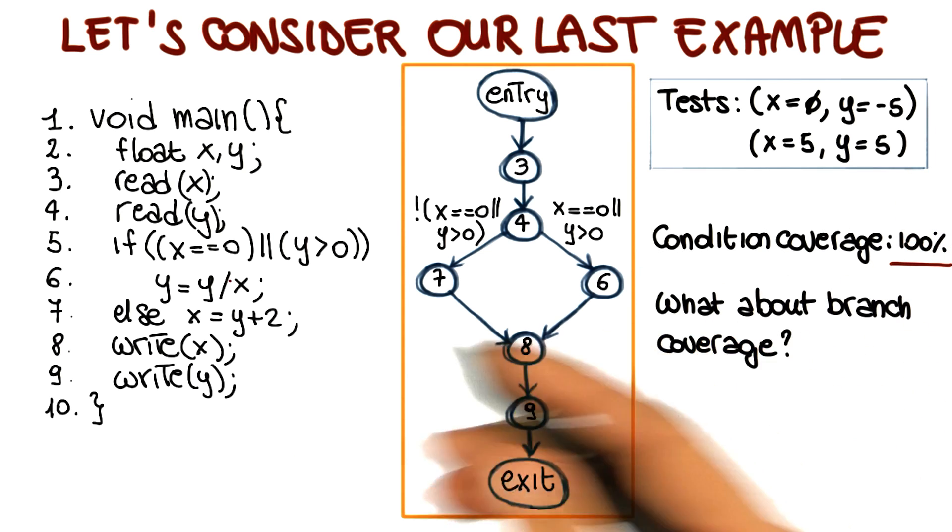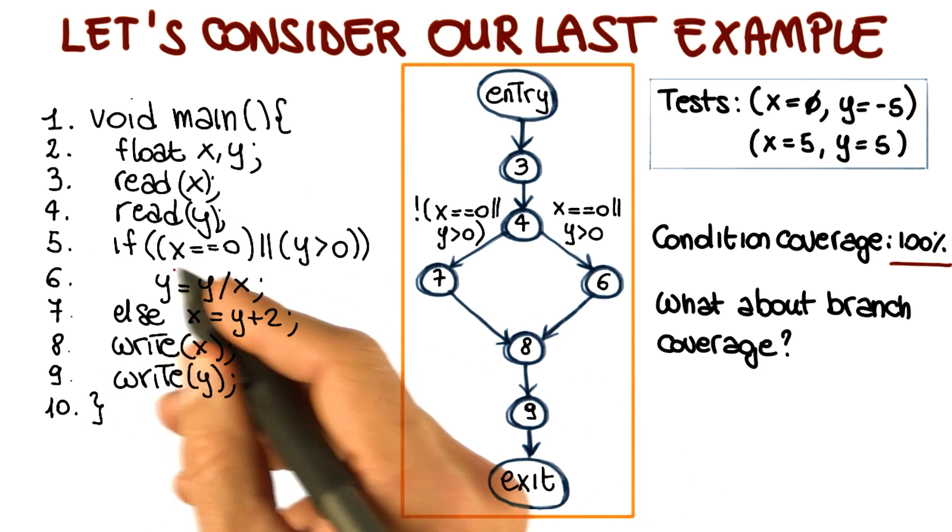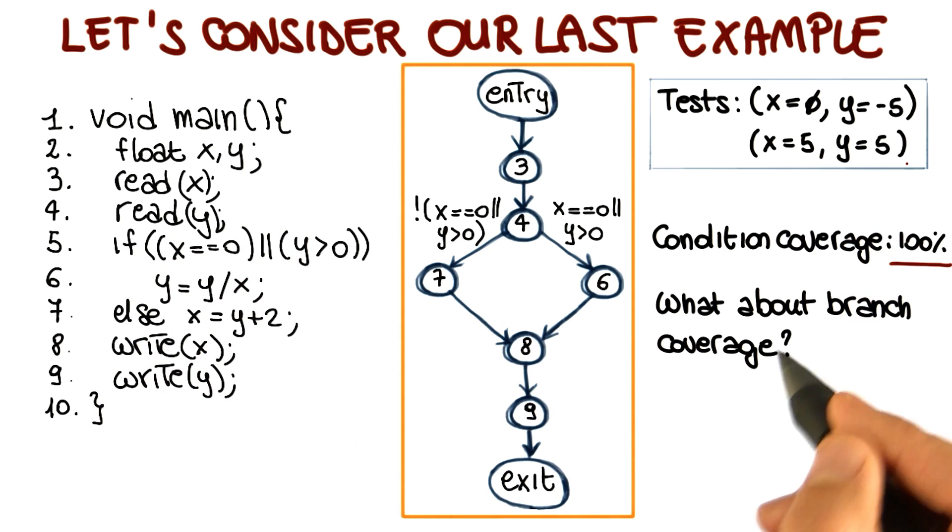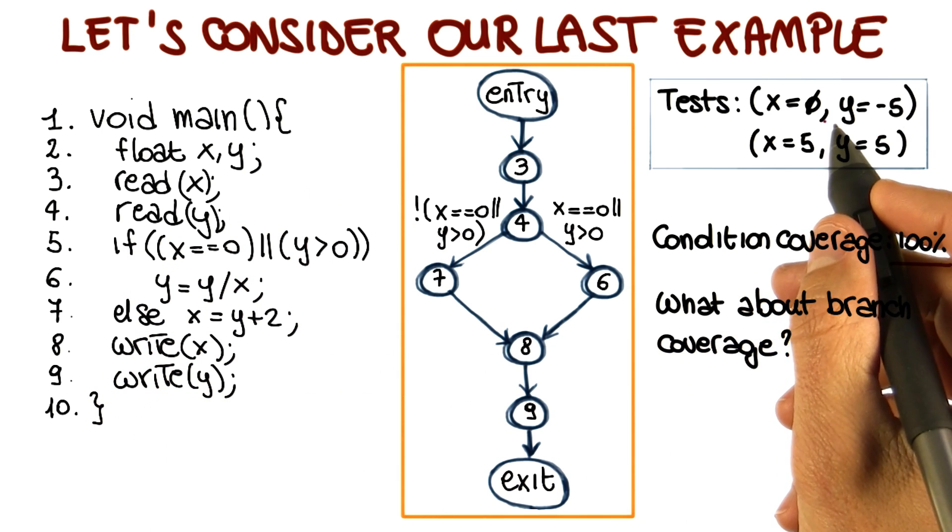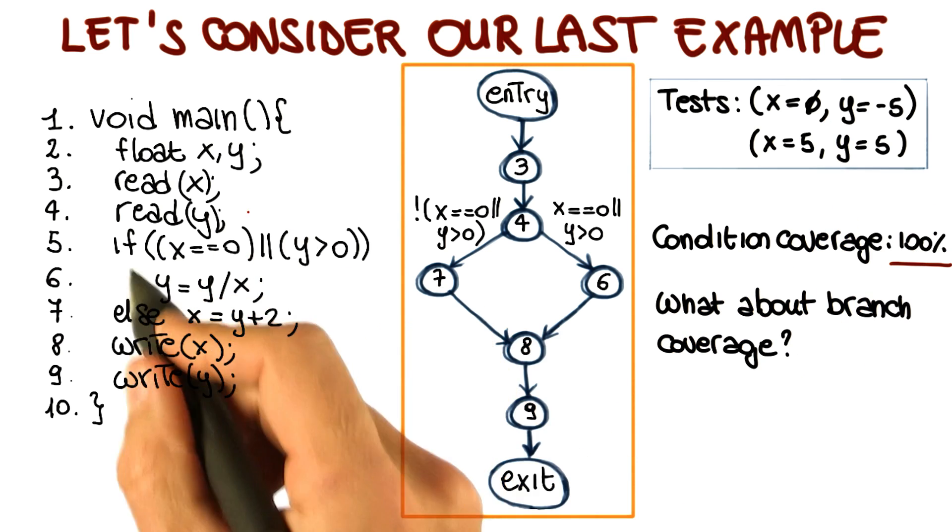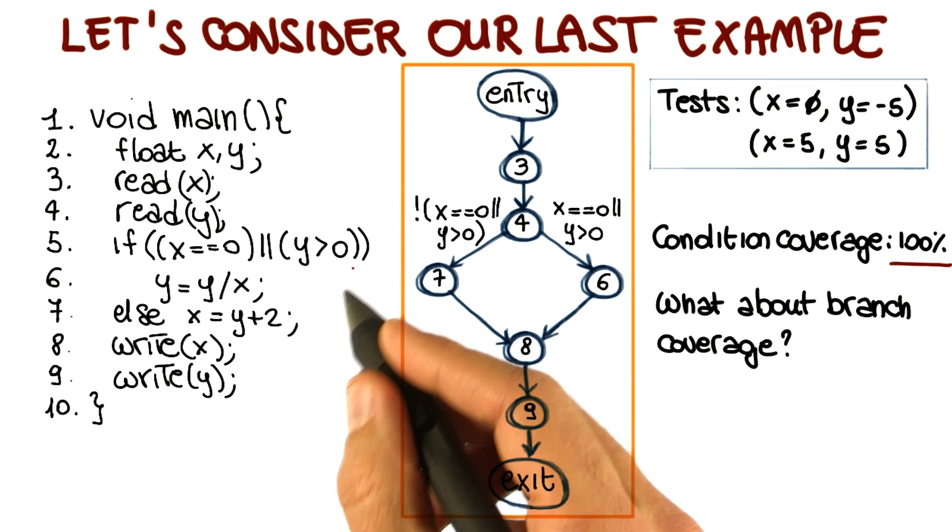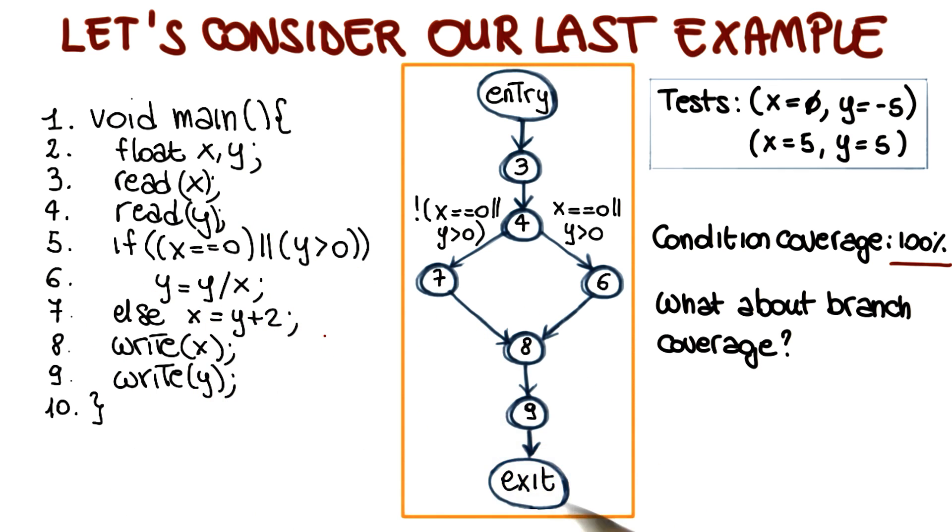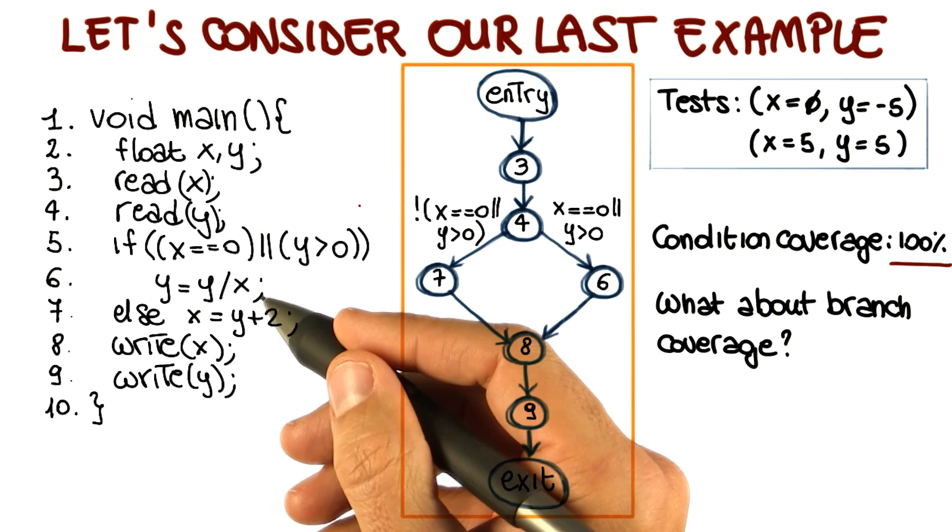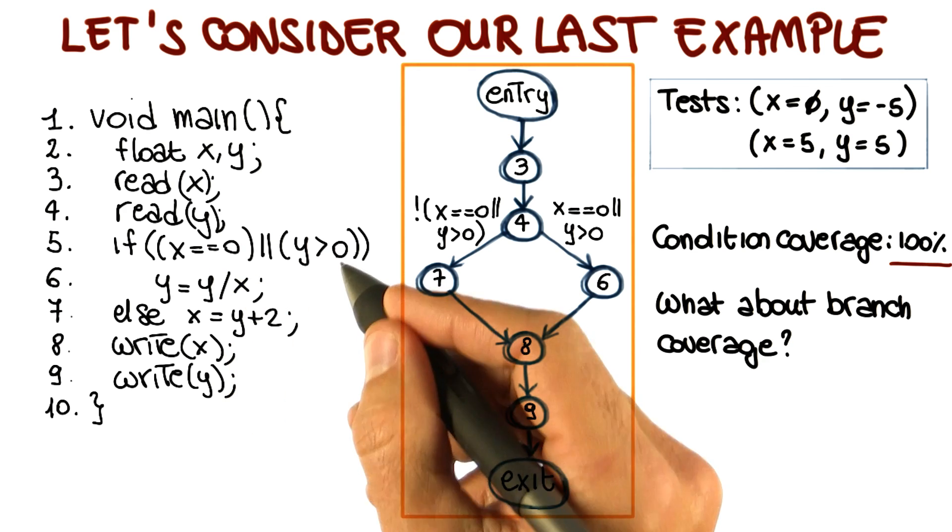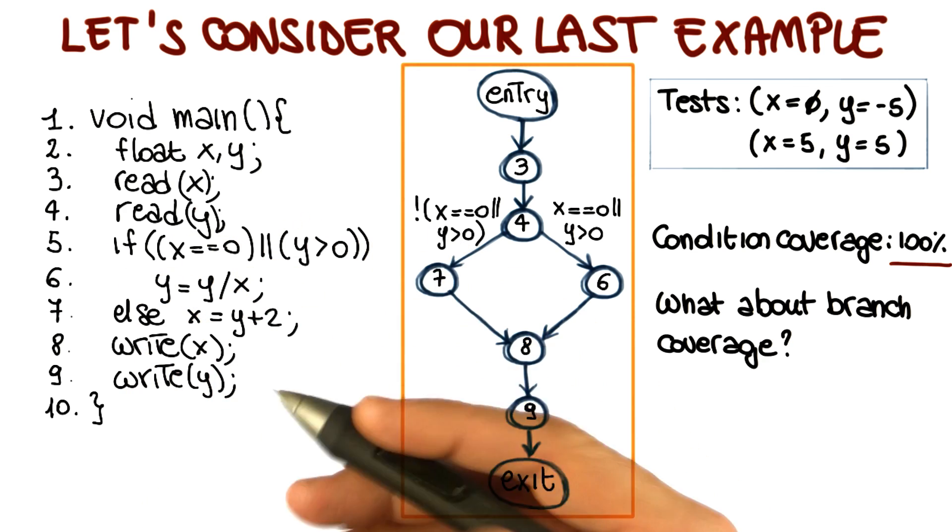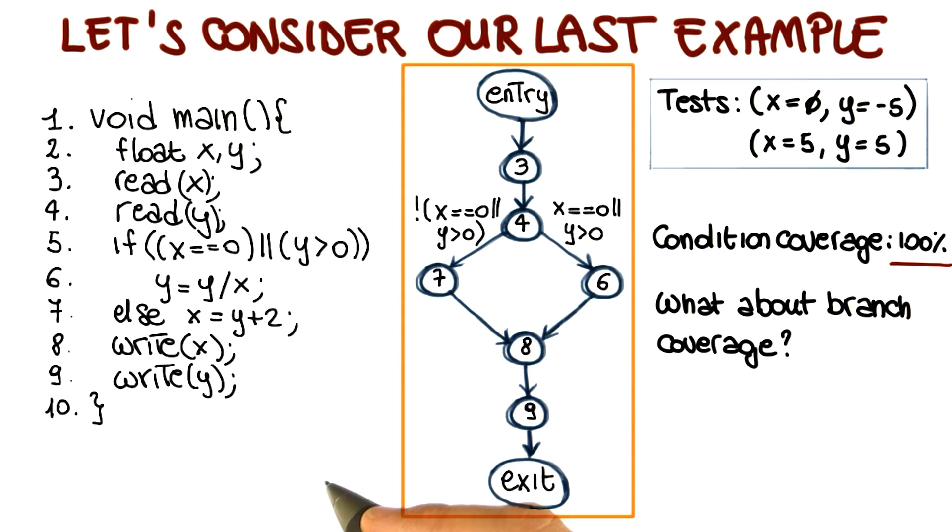But what about branch coverage? If we consider the whole predicate instead of just the individual conditions, let's see what happens. For the first test case, because x = 0, the overall predicate is true. For the second one, because the second condition is true, the overall predicate is true. In other words, despite exercising all possible values for the two conditions, the overall predicate is always true, and therefore we're covering only one of the two branches. So our coverage will be 50%.